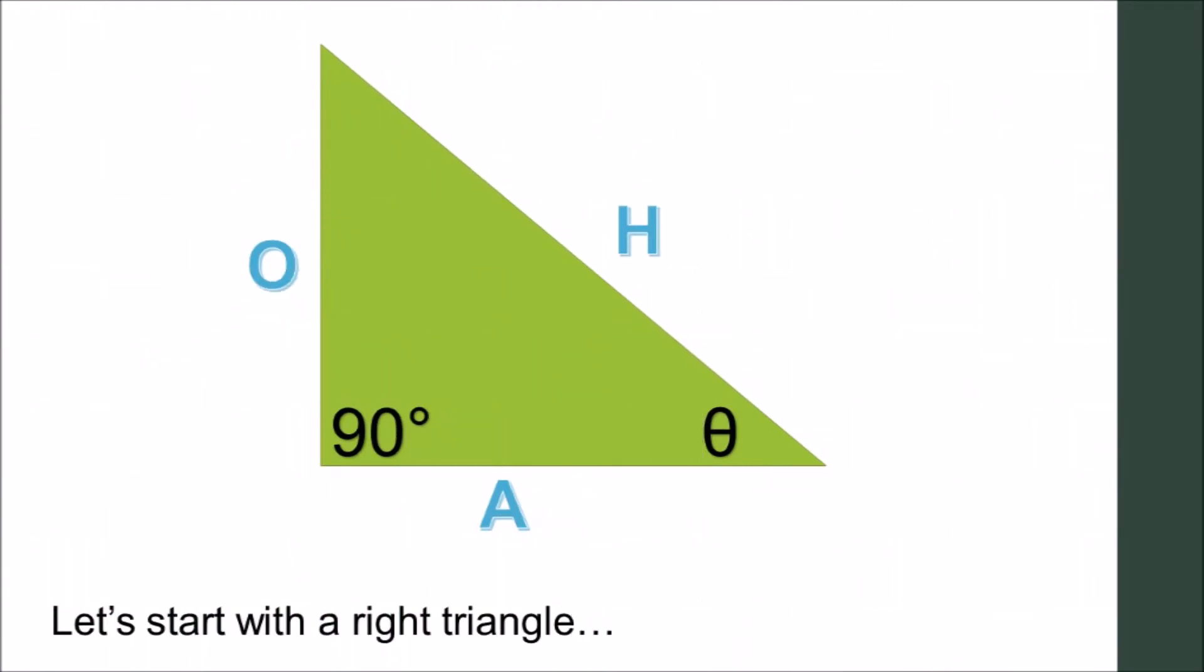Let's start with a right triangle. A right triangle has one right angle measuring 90 degrees. I'm going to designate one of the other angles as theta. Theta also represents the x on the introduction slide.